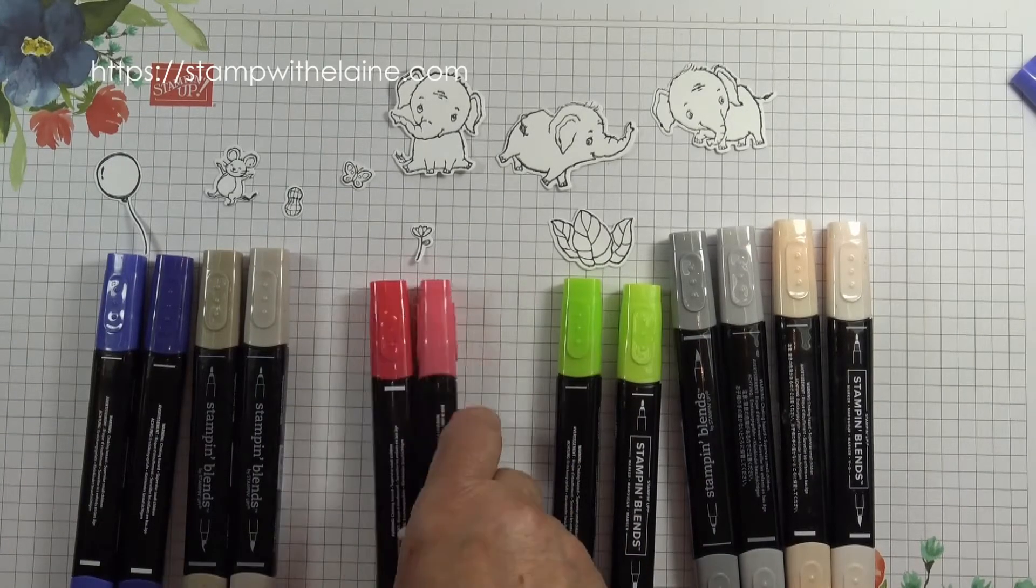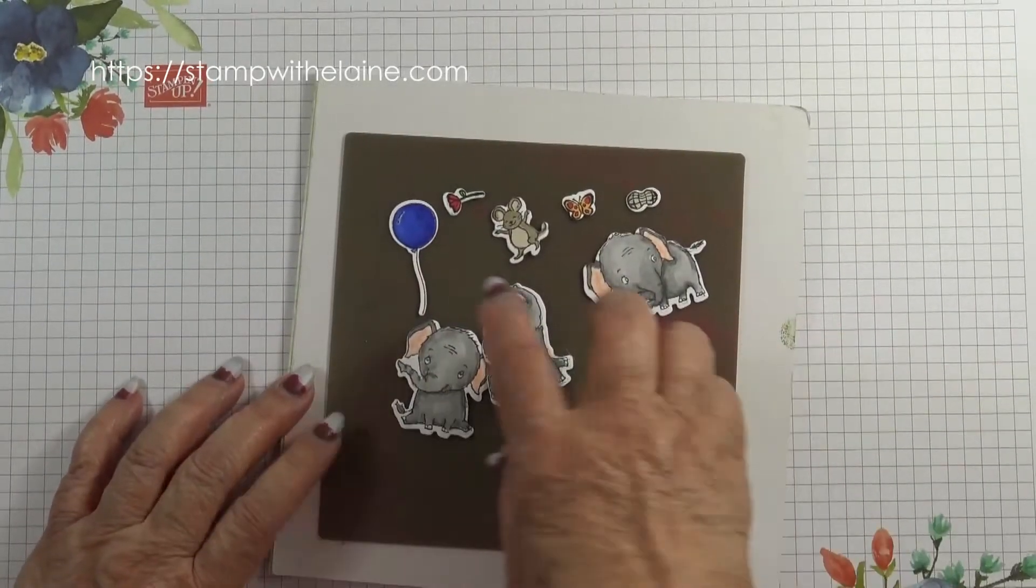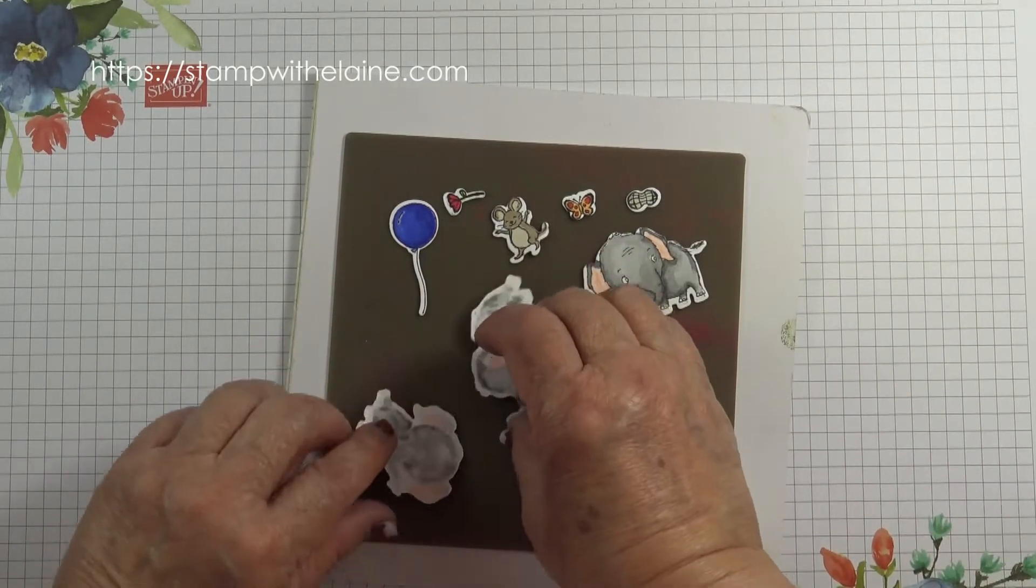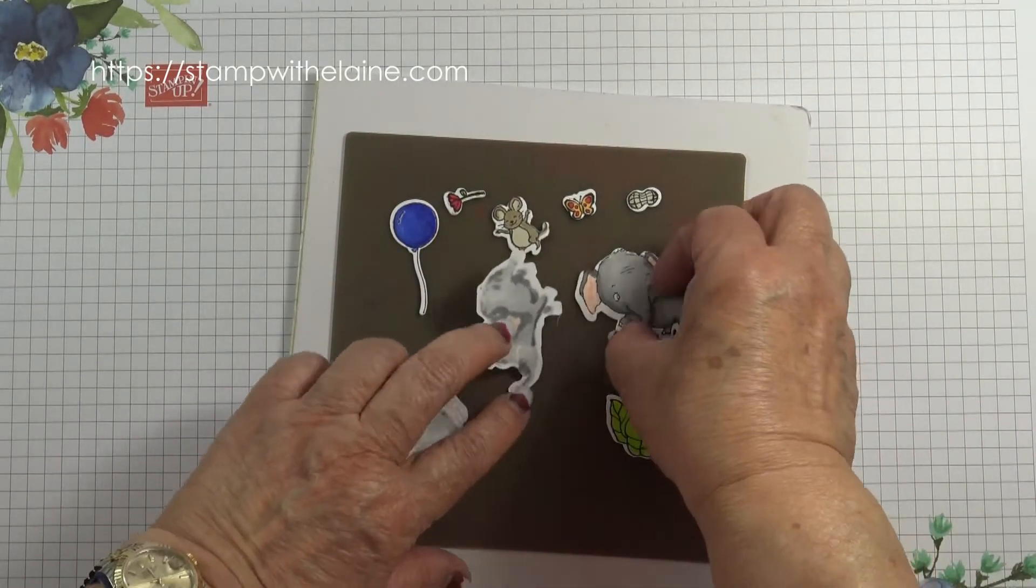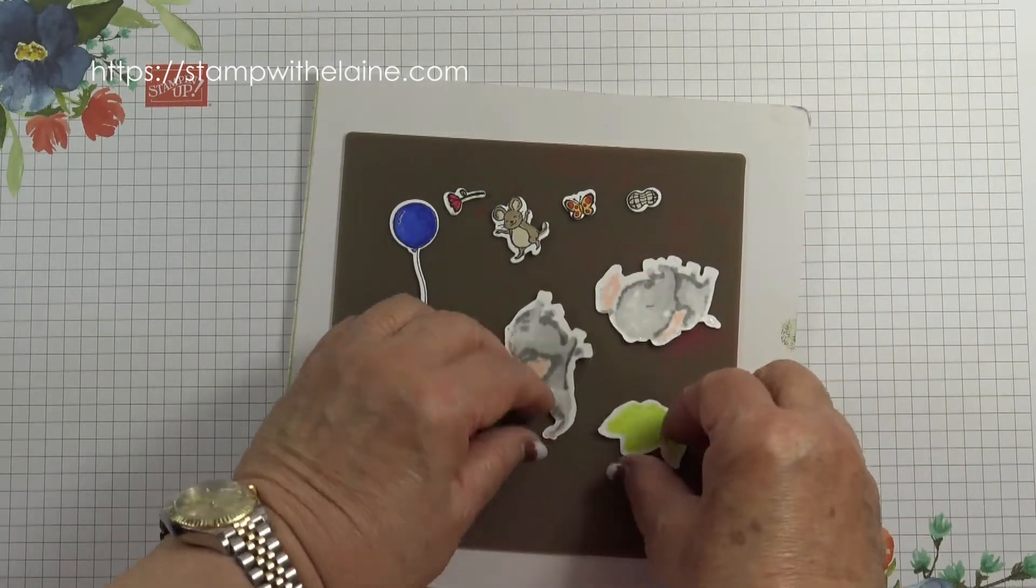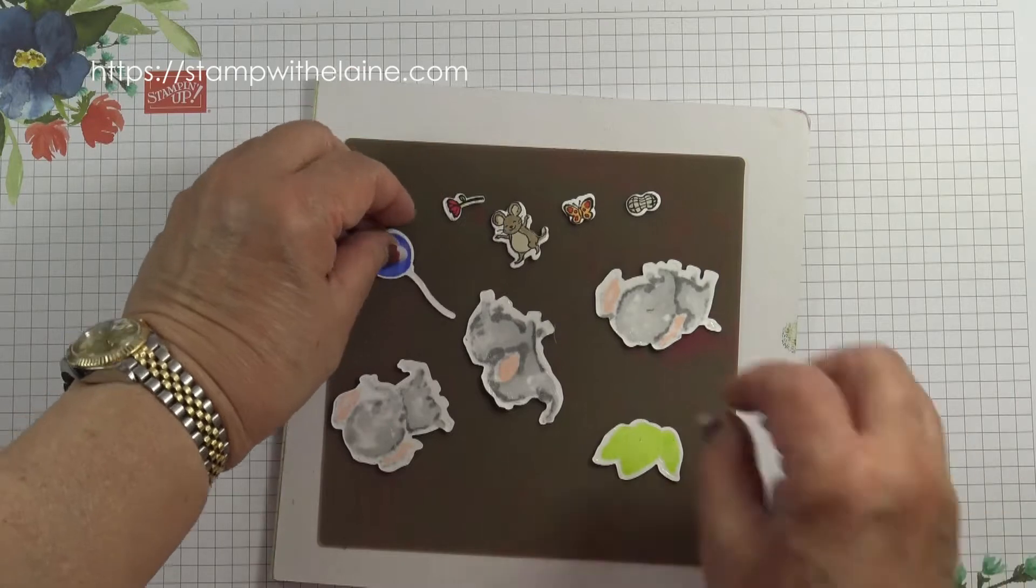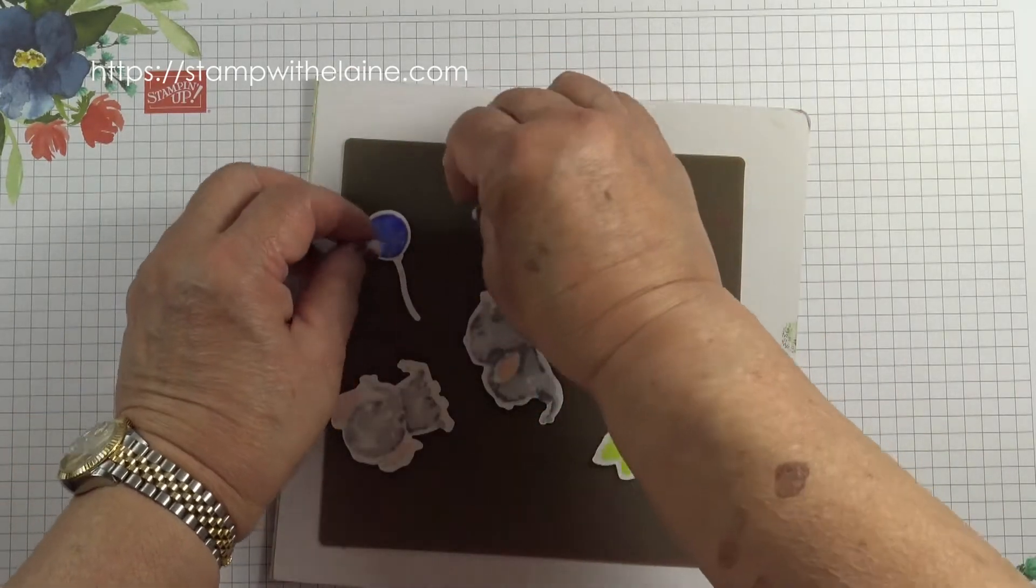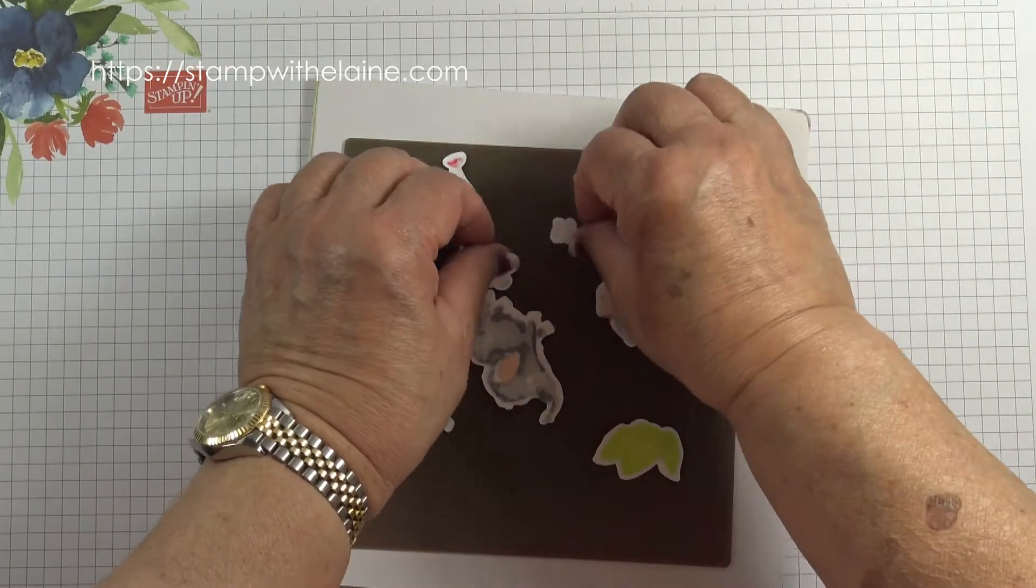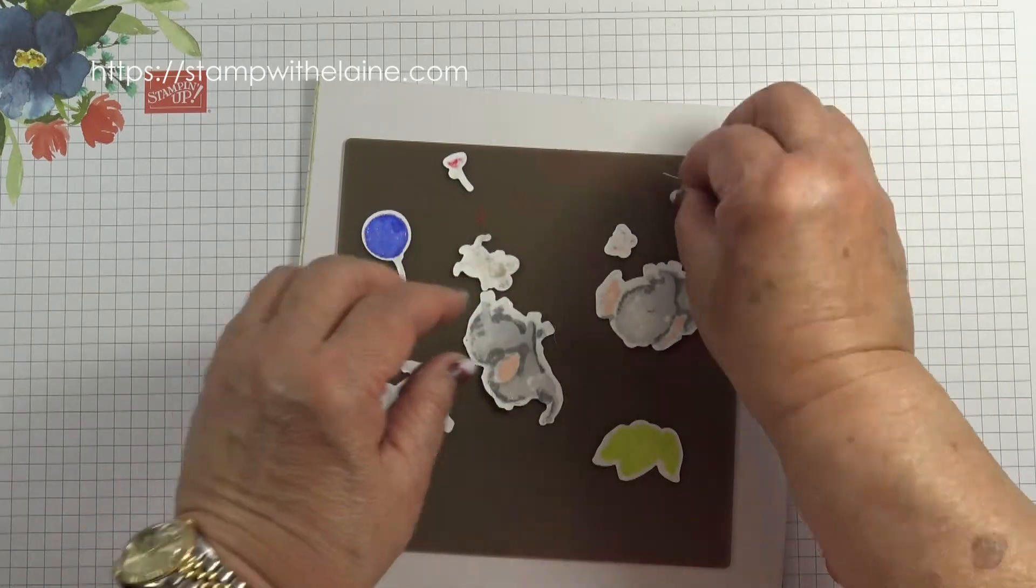The butterfly I used a combination of sweet sorbet and mango melody. To save time I've already colored in my elephants and at the same time I put Tombow glue on the back and allowed it to dry, because Tombow glue if you apply it wet is permanent, but if you allow the Tombow to dry once you've applied it, it will act like a post-it note and will be repositionable. So I've done that for all these and we'll set that aside and then construct the box.